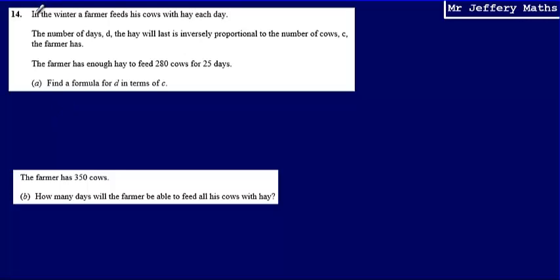This is question 14. Here we're told that in the winter a farmer feeds his cows with hay each day. We're told the number of days D that the hay will last is inversely proportional to the number of cows C. The farmer has enough hay to feed 280 cows for 25 days.